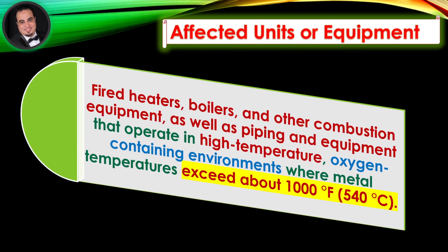Affected units or equipment. Significant oxidation occurs in fired heaters, boilers, and other combustion equipment, as well as piping and equipment that operate in high-temperature, oxygen-containing environments where metal temperatures exceed about 1,000 degrees Fahrenheit.